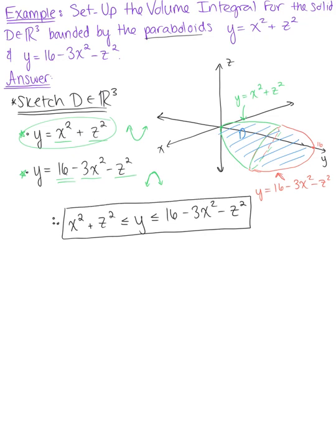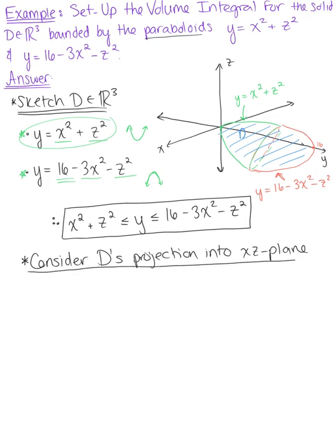Now that we have the bounds for y, we consider the solid's projection into two dimensions — specifically into the x-z plane. From the graph, this projection casts a shadow into the x-z plane. To find it precisely, we equate our surfaces. Since the projection is in the x-z plane, y equals zero, so we set x squared plus z squared equal to 16 minus 3x squared minus z squared.